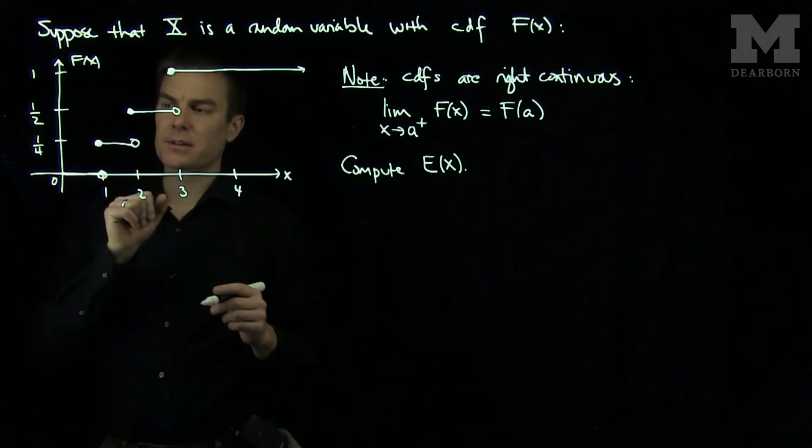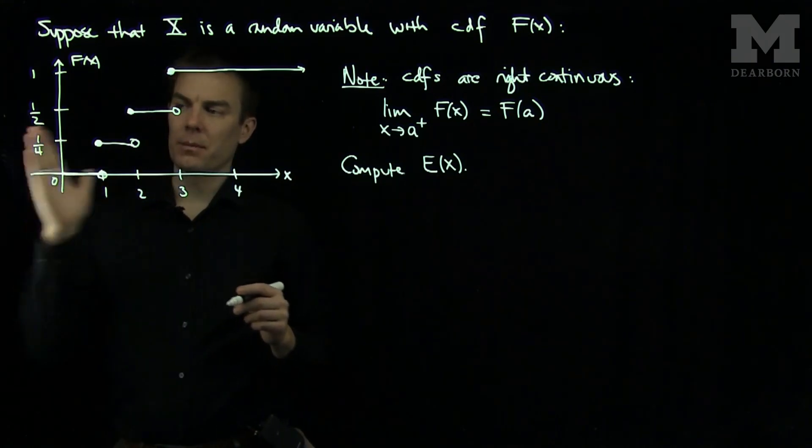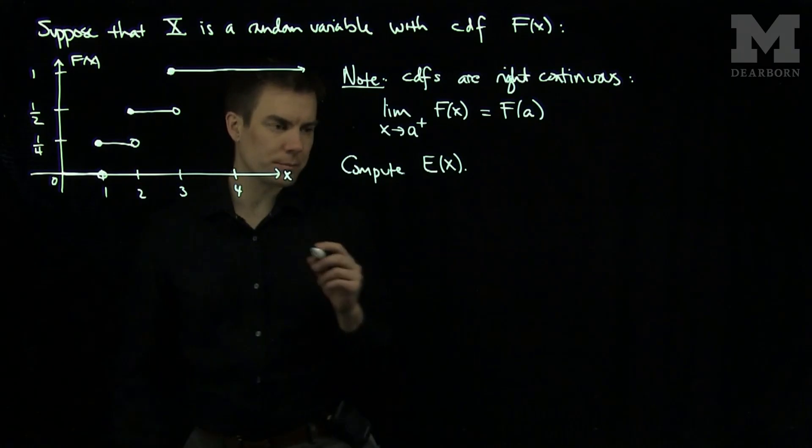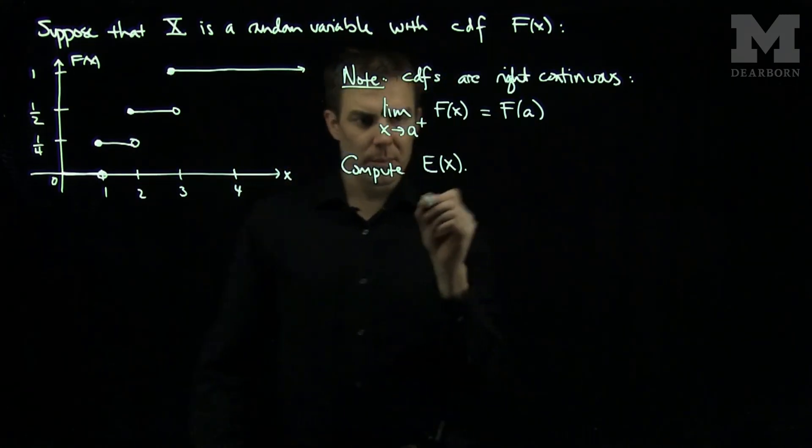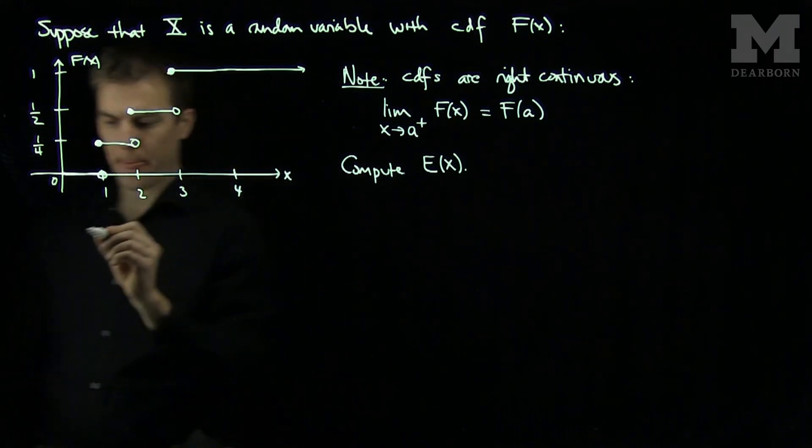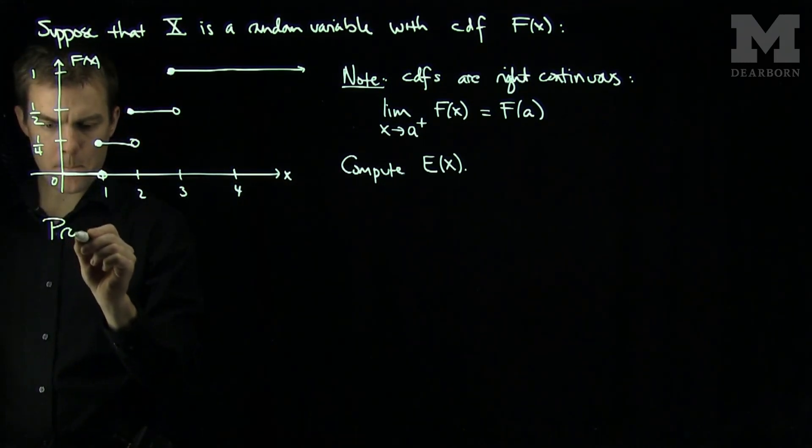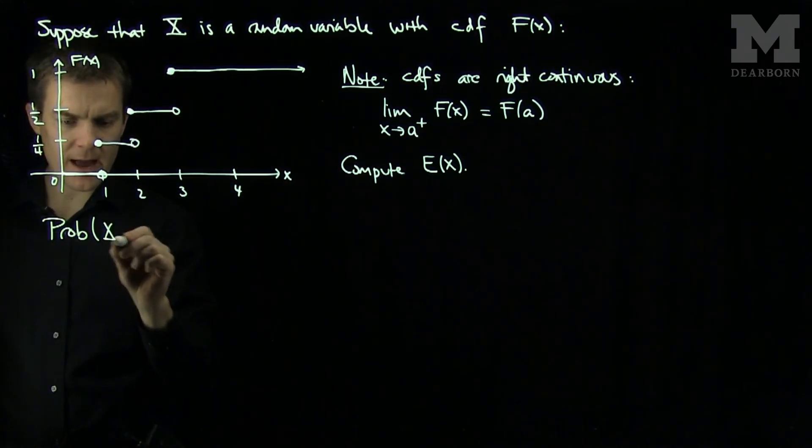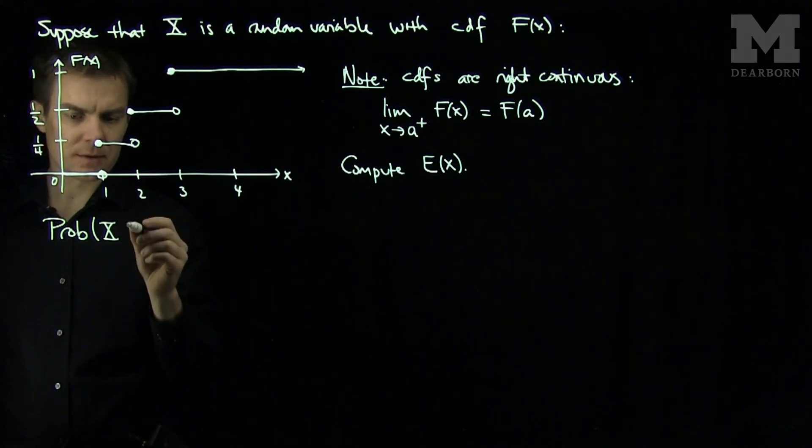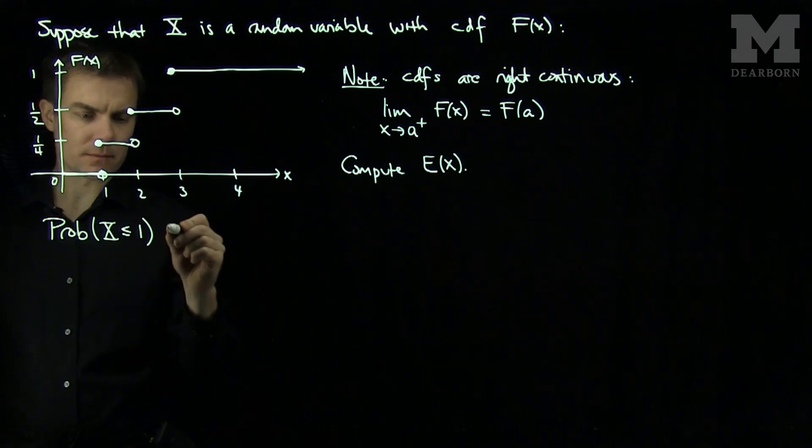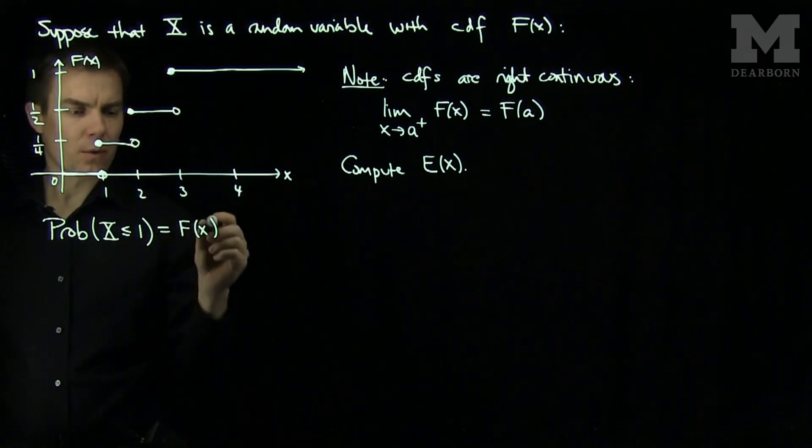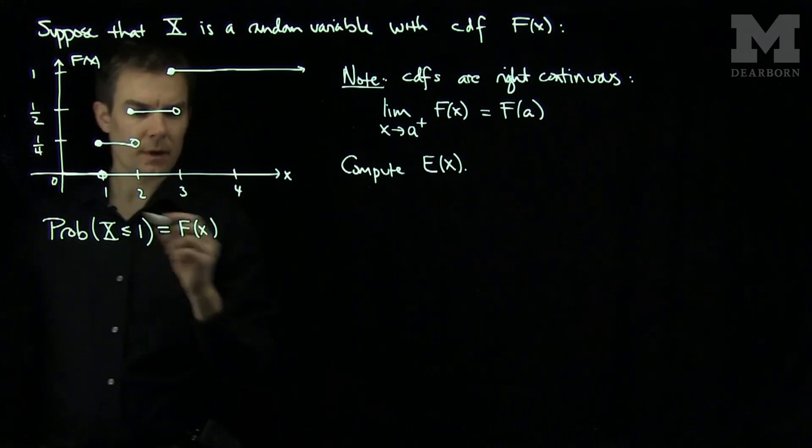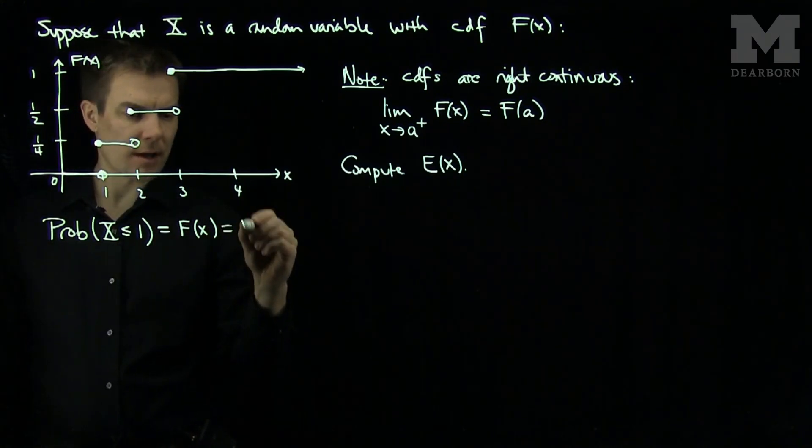And as soon as x hits the value of 1, the probability is going to be 1/4 up until 2. So the probability that X is less than or equal to 1 is F(x) when x is equal to 1, and this will be equal to F(1).